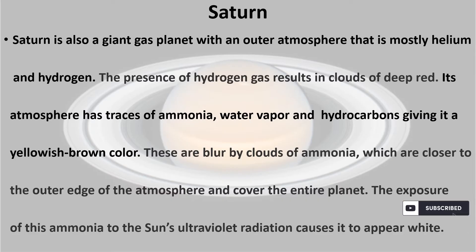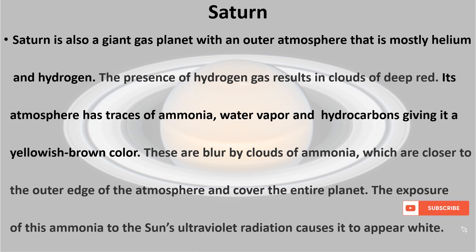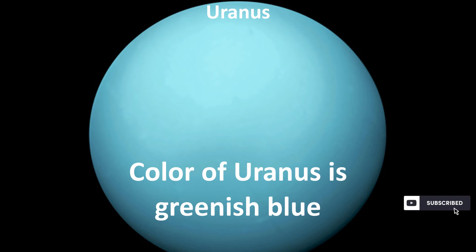The color of Saturn is yellowish brown. Saturn is also a giant gas planet with an outer atmosphere that is mostly helium and hydrogen. The presence of hydrogen gas results in clouds of deep red, while traces of ammonia, water vapor, and hydrocarbons give it a yellowish brown color. These are blurred by clouds of ammonia closer to the outer edge of the atmosphere, which cover the entire planet. Exposure of this ammonia to the Sun's ultraviolet radiation causes it to appear white.